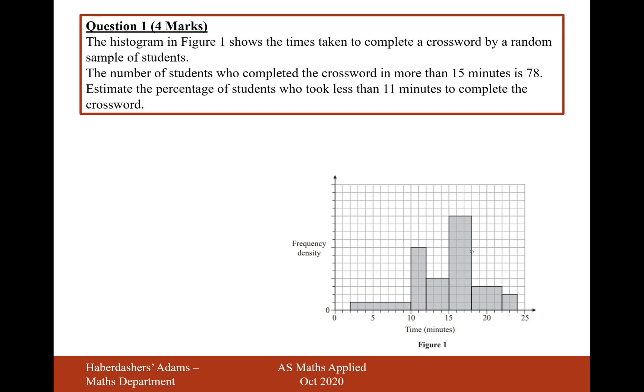So what we could do here, and just remember the key for histogram questions, is that it's the area of the boxes that represent the frequency. We don't have the scale on the frequency density axis, so it's going to be a little bit difficult to work out the areas of these bars. But another strategy for histograms is to work out the area of the bars by working out how many boxes are in each bar.